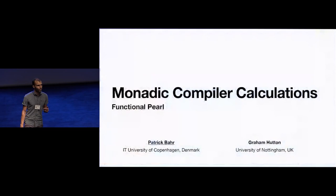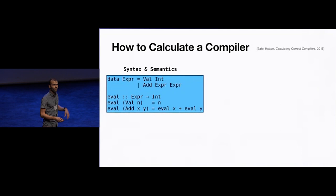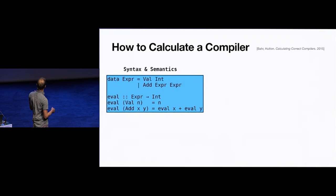This is joint work with Graham Hutton. We're going to show how to calculate compilers with the help of monads, which will allow us to express diverging behavior in our source language. We have given the syntax and semantics of a source language as an algebraic data type, and then the semantics given as an interpreter.